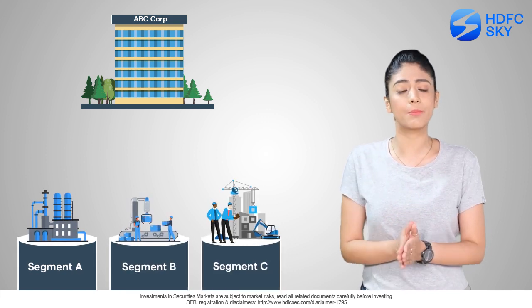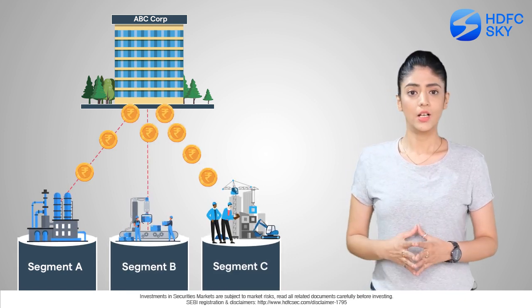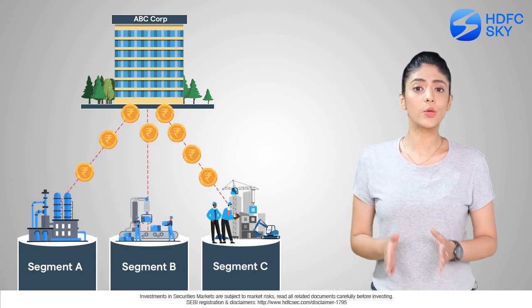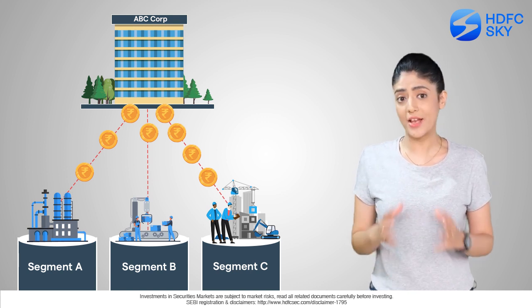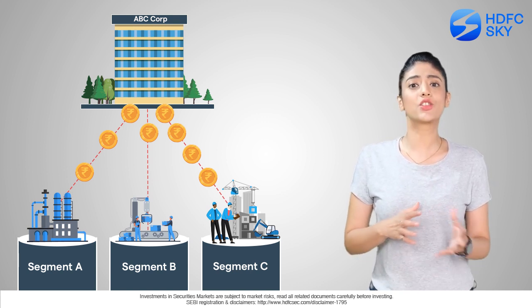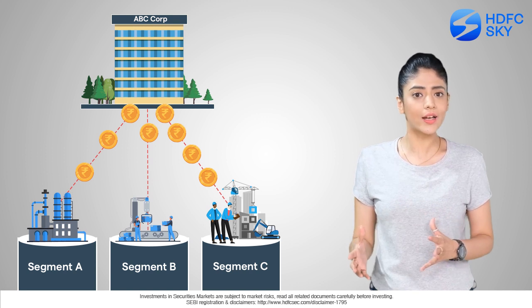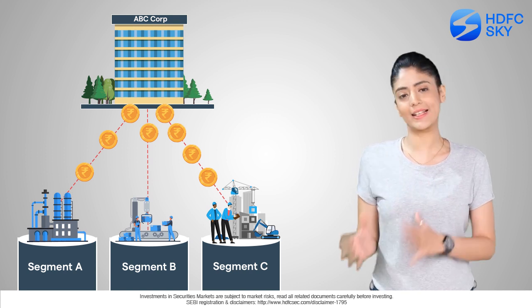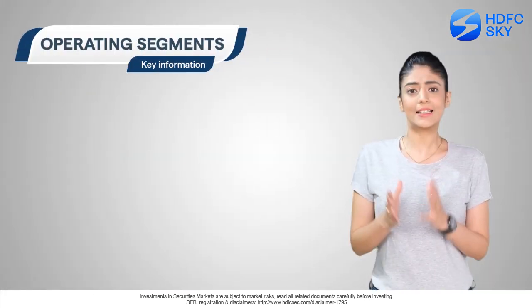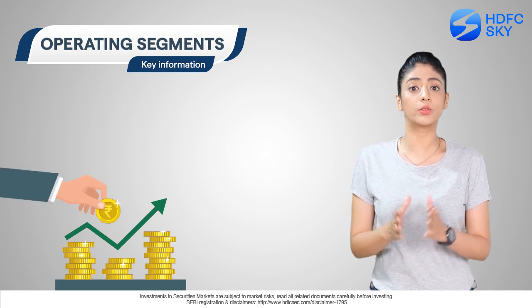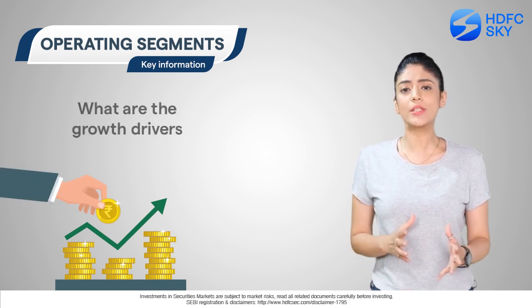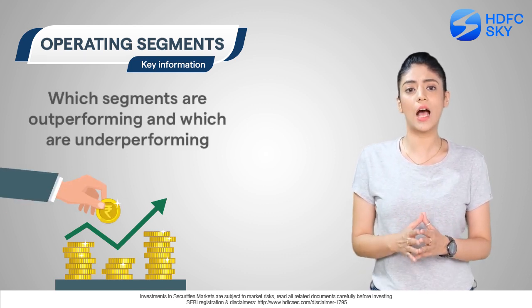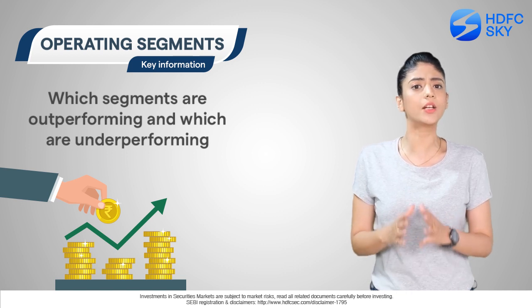Number three: operating segments. From the income statement we get to know which business segment contributes how much, but in the notes you can get a much better understanding of their growth trajectory — how fast segments are growing, their industry share, etc. This can give you a deeper understanding about the growth drivers of a business.